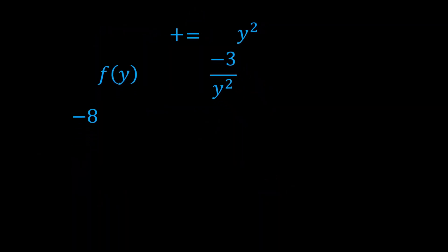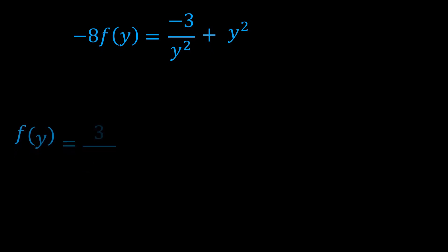This result is a single equation in the required unknown, which is the function f(y). By dividing each term by -8, we get f(y) = 3/(8y²) - y²/8.